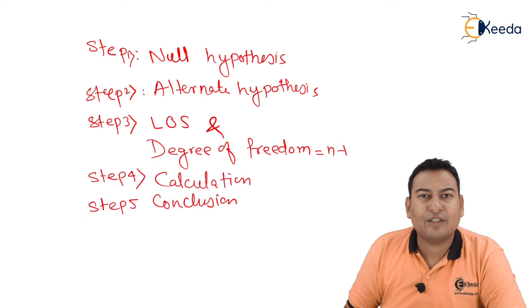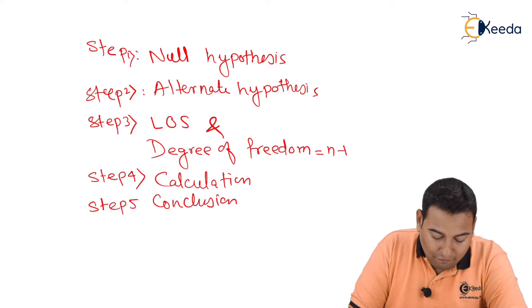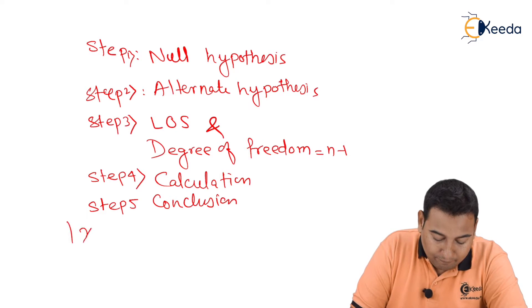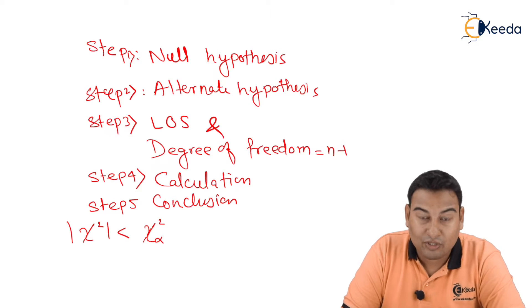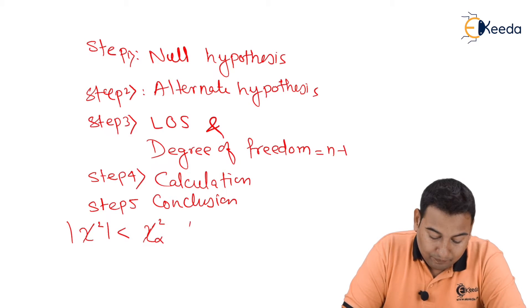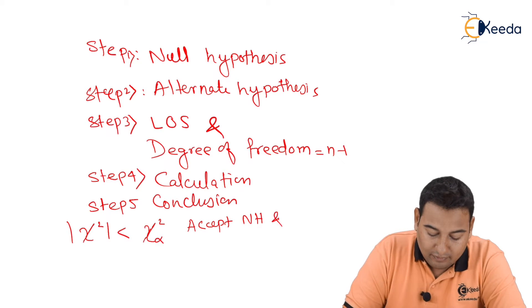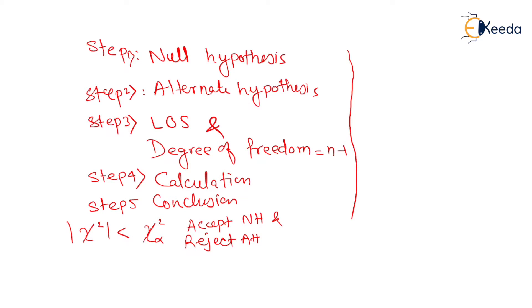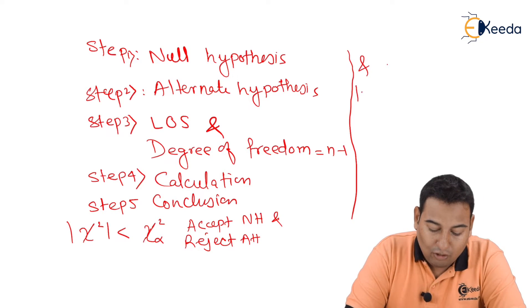As discussed earlier, the same thing: if mod of chi-square is less than chi-square alpha, then accept NH and reject AH. Please remember this. And if mod of chi-square is greater than chi-square alpha, then reject NH and accept AH.